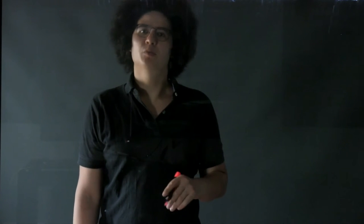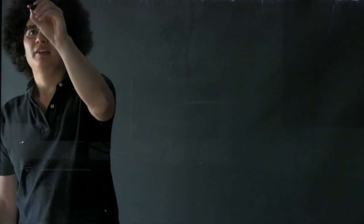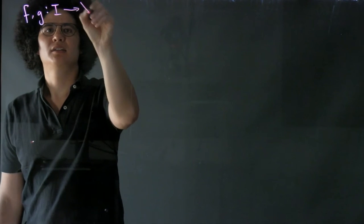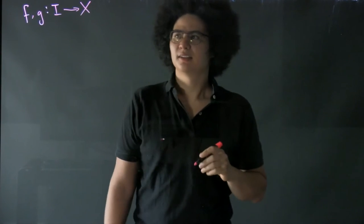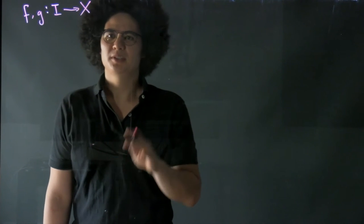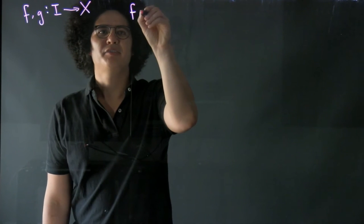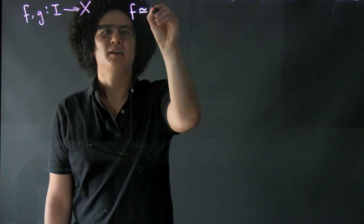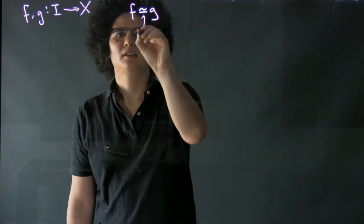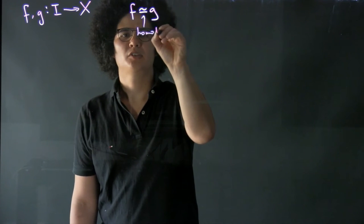Last time we described what a homotopy of paths was. If F and G are paths in our space X and there exists a homotopy between them, we say that F is homotopic to G and we write it like this. So this is homotopic.